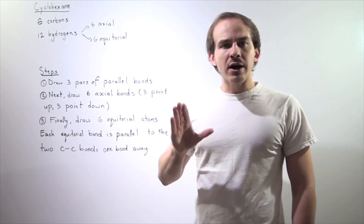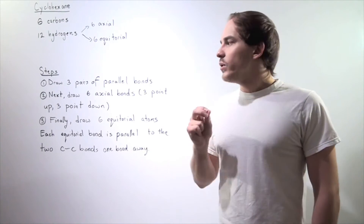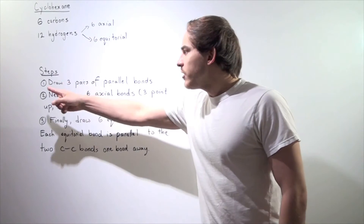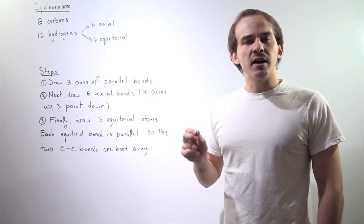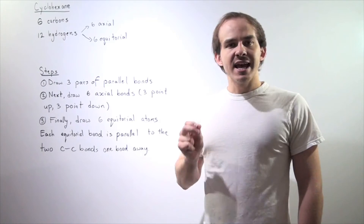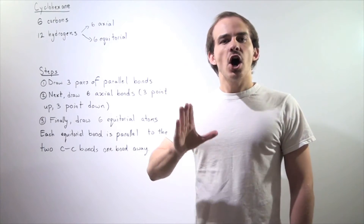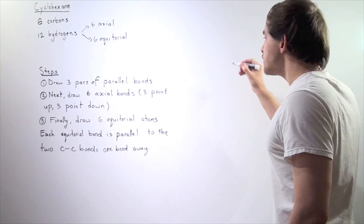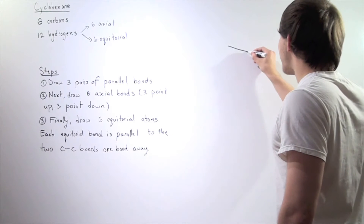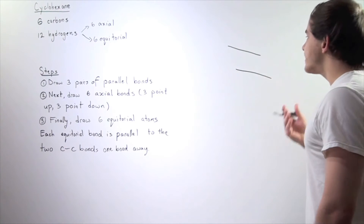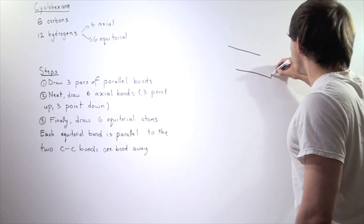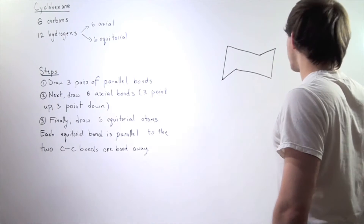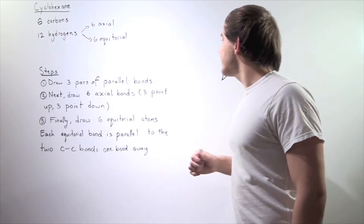Whenever we draw our chair conformation for cyclohexane, we have to follow these three steps. Let's begin with step one: draw three pairs of parallel lines, and each line represents a bond, so opposing bonds are parallel. Our first pair of parallel lines are slightly slanted, our second pair points upward, and our final pair connects our ring. And this is our cyclohexane.